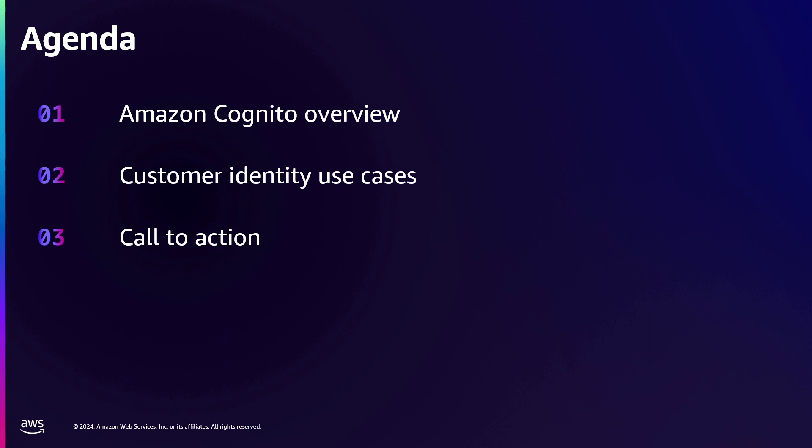Here's our agenda. We're going to keep it real crisp. We're going to have a quick overview of some of the challenges and how those challenges can be overcome with Amazon Cognito. We're going to spend the majority of our time on the use cases and walking through the various use cases. And I do have some takeaways and calls to action to learn more and continue your customer identity journey.